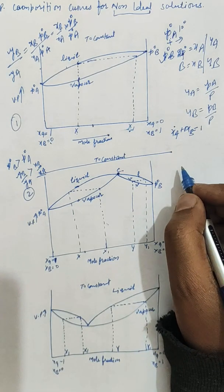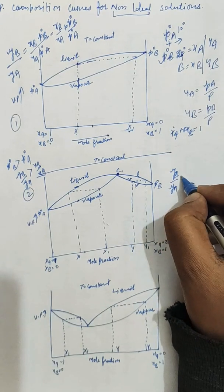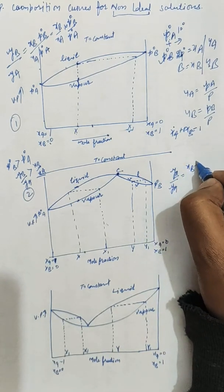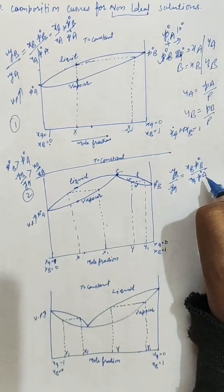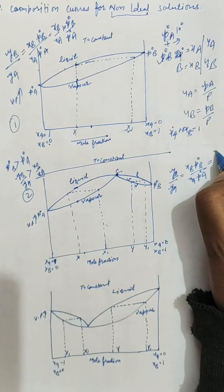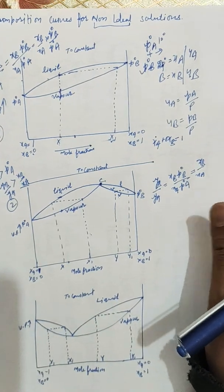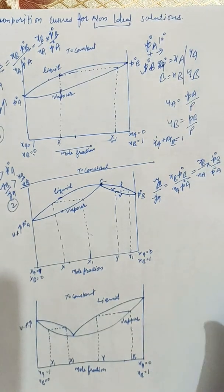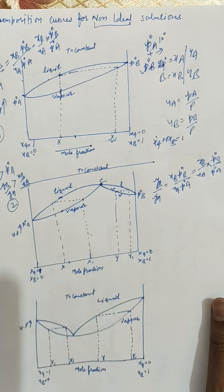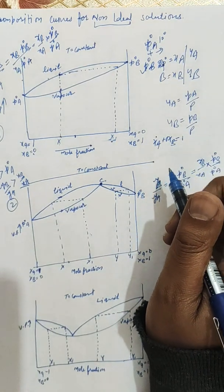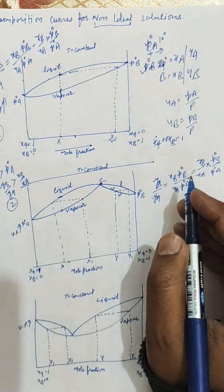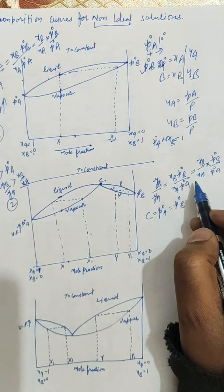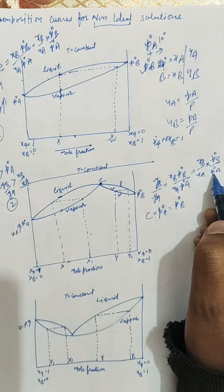Mathematically, the equation is: y_B / y_A = (x_B · p°_B) / (x_A · p°_A) = (x_B / x_A) × (p°_B / p°_A). At point C, p°_A = p°_B, so the equation reduces to y_B / y_A = x_B / x_A, confirming that both phases have the same composition at the maximum point C.